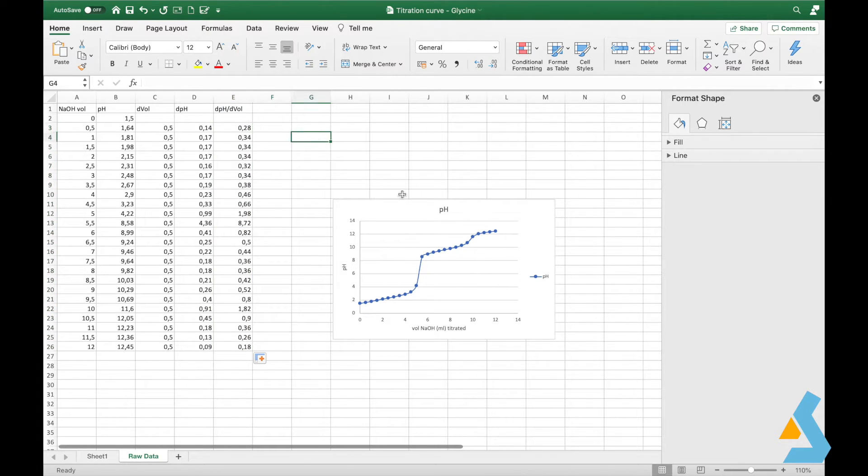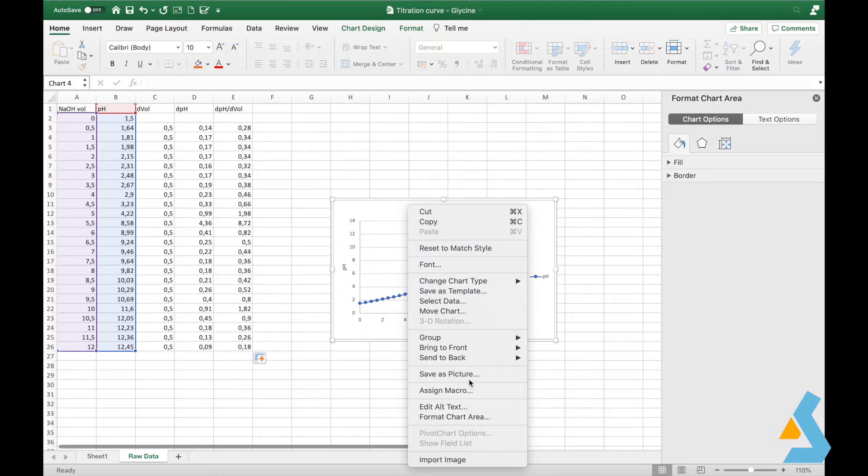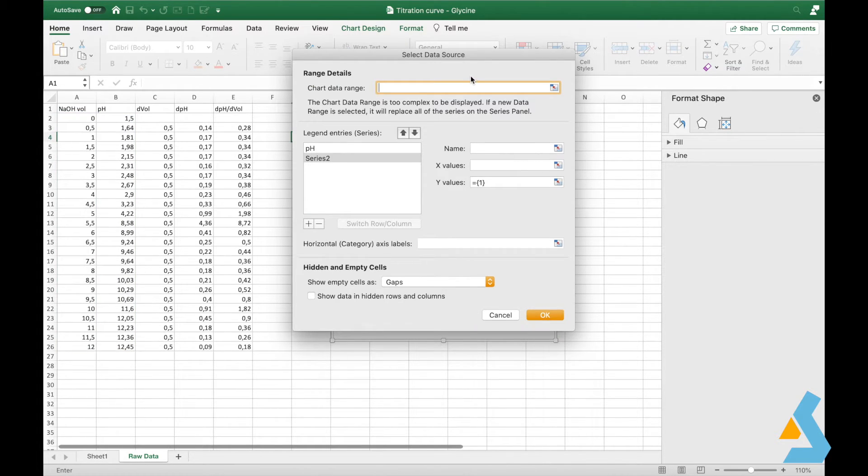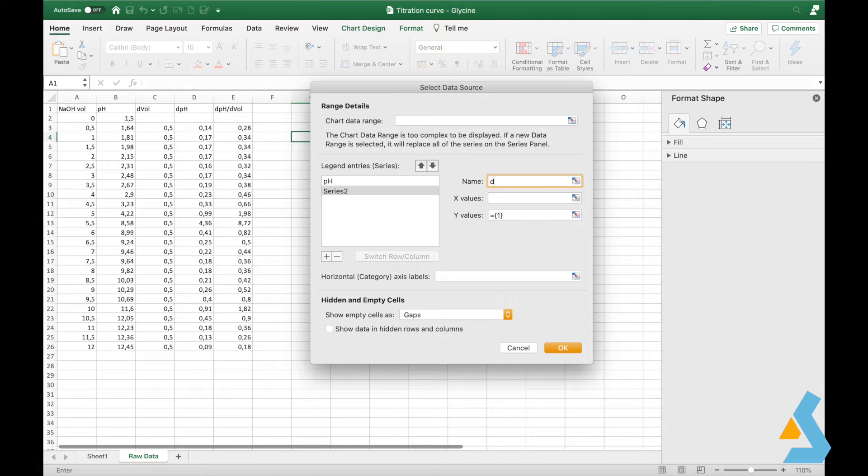Now, we can plot this new data. We go to our graph, then click select data and add new series, which we name delta pH per delta volume. For x values, we chose sodium hydroxide volume, and for y values, we chose the derivative values.